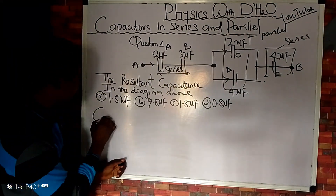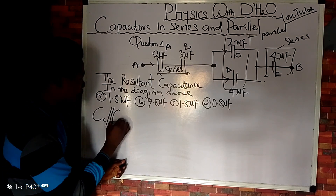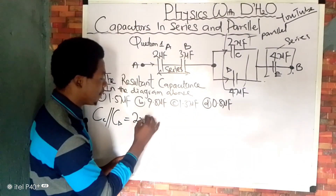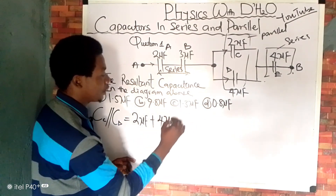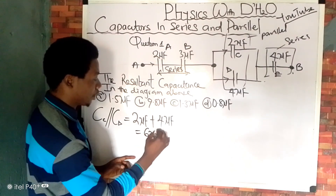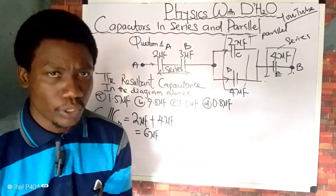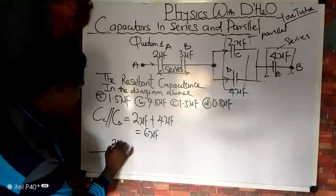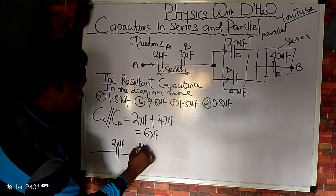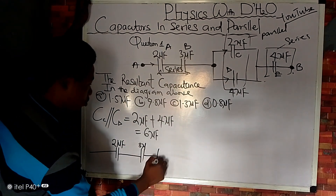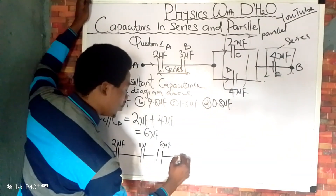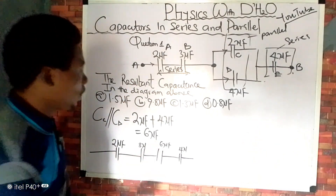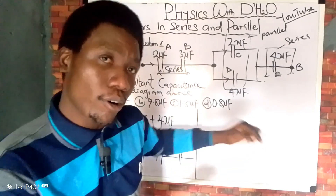Capacitors C and D are in parallel. If they are in parallel, we just add them together: two microfarads plus four microfarads gives us six microfarads. We have combined these two together in parallel to get six microfarads. So the circuit now becomes: two microfarads, then three microfarads, then the combined six microfarads, then four microfarads.